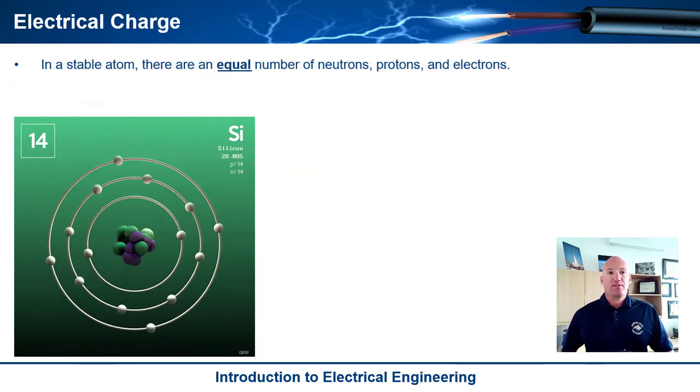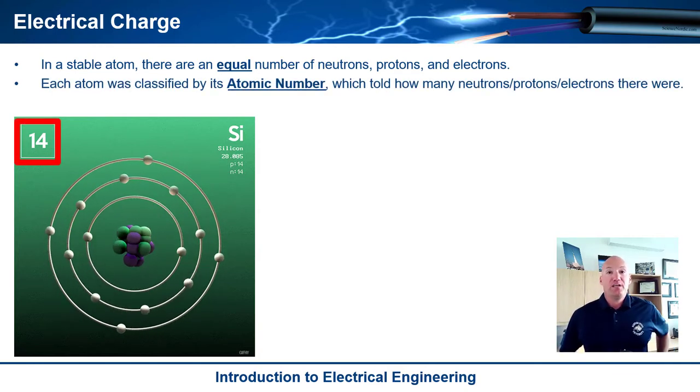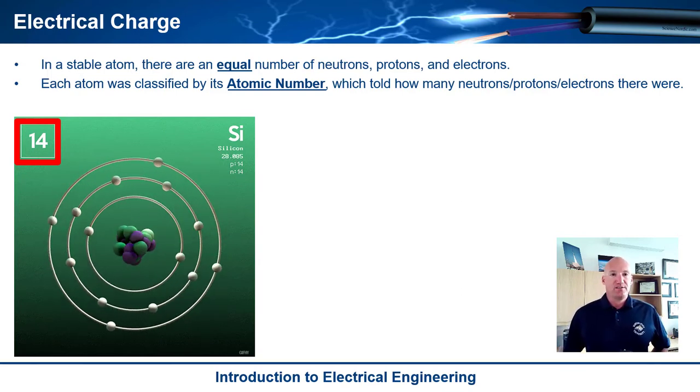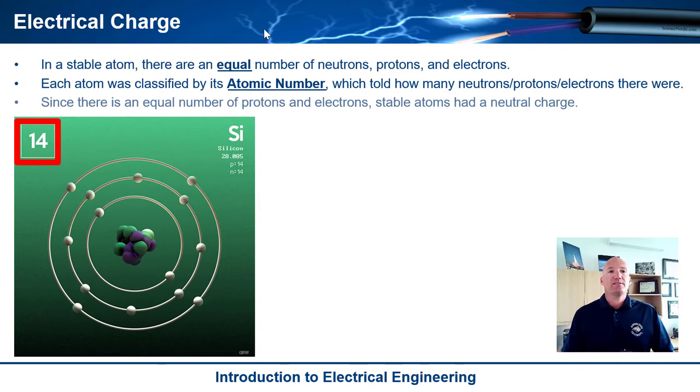So in a stable atom, the way that this model works is that there's an equal number of neutrons, protons, and electrons. And that's good because the charges kind of cancel each other out. And so then each atom within the periodic table is classified by what they call its atomic number. And so in this example, this element is silicon, and its atomic number is 14. What that means is that there's 14 neutrons in the nucleus, there's 14 protons in the nucleus, and then there's 14 orbiting electrons in the outer shells. So that's what the atomic number means. And since there's an equal number of protons and electrons, stable atoms had a neutral charge.